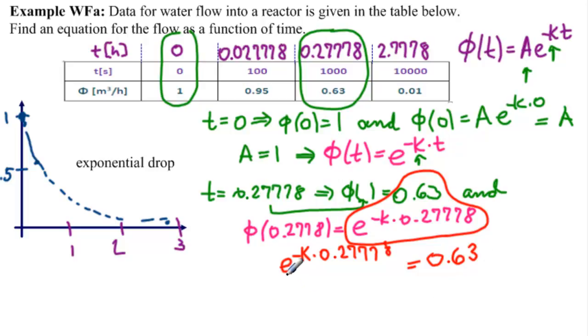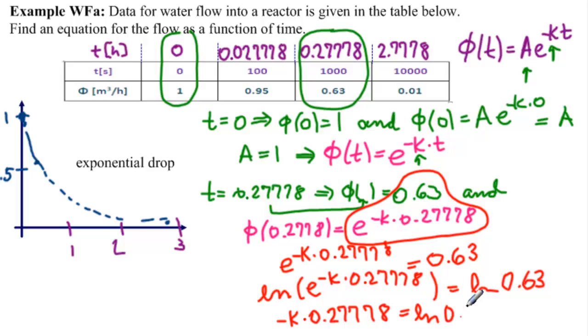Because we have e, we're going to take ln of both sides so that it cancels. Ln of e to the minus k times 0.27778 equals Ln of 0.63. The exponent comes up front, and ln of e is 1, so we have minus k times 0.27778 equals Ln of 0.63.